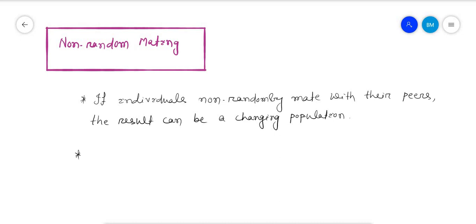There are many reasons for non-random mating. I'm giving some examples here.